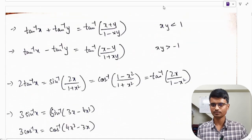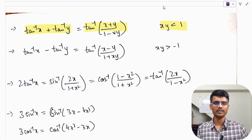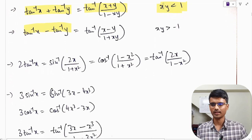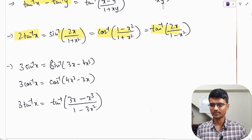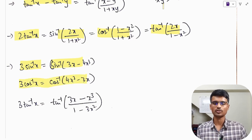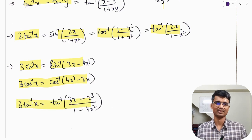Tan⁻¹x + tan⁻¹y = tan⁻¹((x + y) / (1 − xy)), provided xy < 1. Tan⁻¹x − tan⁻¹y = tan⁻¹((x − y) / (1 + xy)). Also: 2 tan⁻¹x = sin⁻¹(2x / (1 + x²)) = cos⁻¹((1 − x²) / (1 + x²)) = tan⁻¹(2x / (1 − x²)). Further: 3 sin⁻¹x = sin⁻¹(3x − 4x³), 3 cos⁻¹x = cos⁻¹(4x³ − 3x), and 3 tan⁻¹x = tan⁻¹((3x − x³) / (1 − 3x²)).